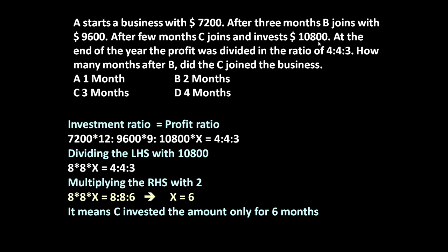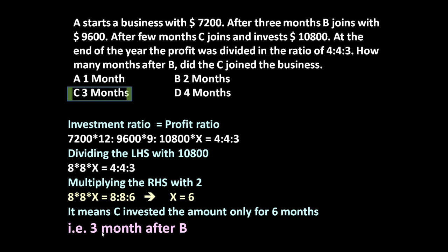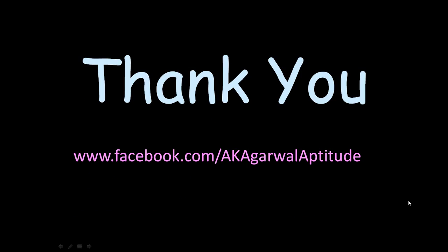So C invested $10800 for only six months, and the profit distribution is in the ratio 4:4:3. But the question asks how many months after B did C join the business. B joins after three months of A, and C joins for the last six months of the year, meaning C joined three months after B. So the answer is three months. Thank you very much for watching this video. You can also follow me on Facebook.